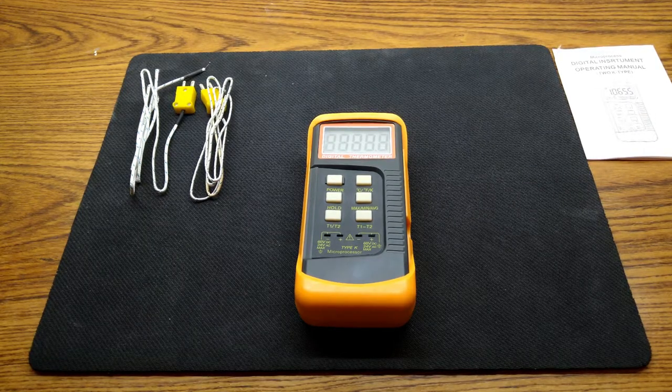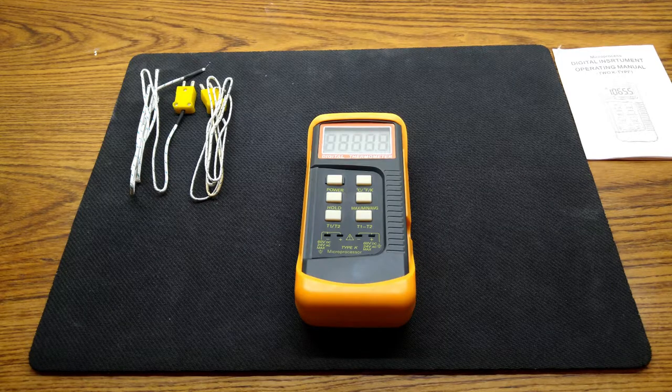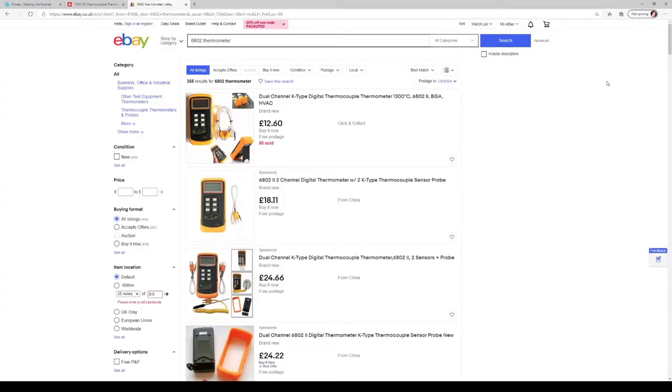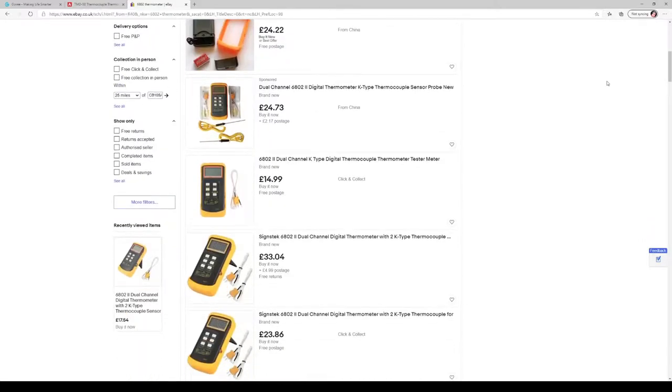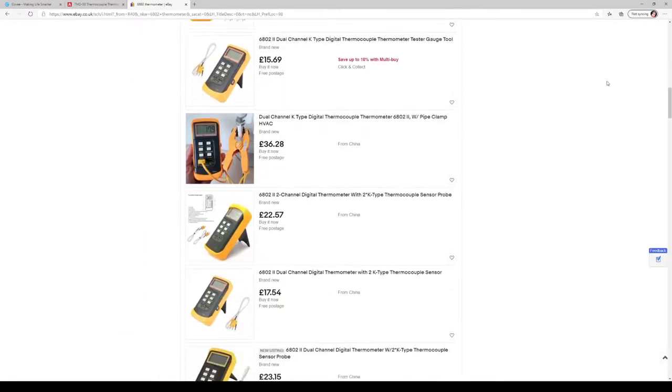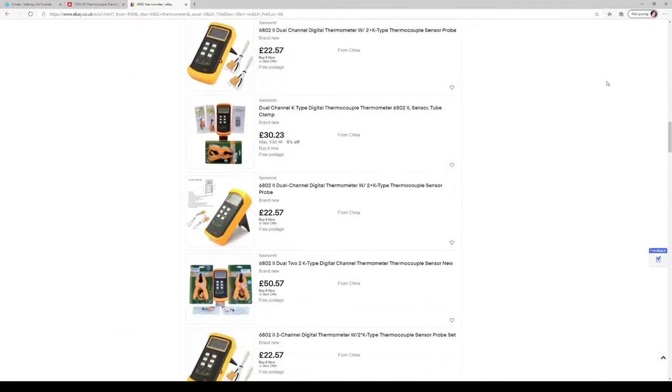Hi, in today's video we're going to take a look at the 6802 digital thermometer. This is a fairly cheap digital thermometer which can be picked up for as low as $18, which is around 13 pounds, shipped directly from China.